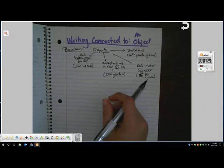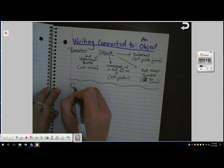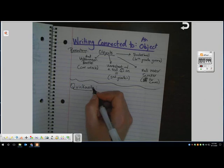After you guys do the brainstorming part, that should take you maybe two or three minutes, then you're going to do the quick write part. So this writing strategy, just like writing connected to a place, has two parts. The quick write part should take you right around five minutes. So here we go.